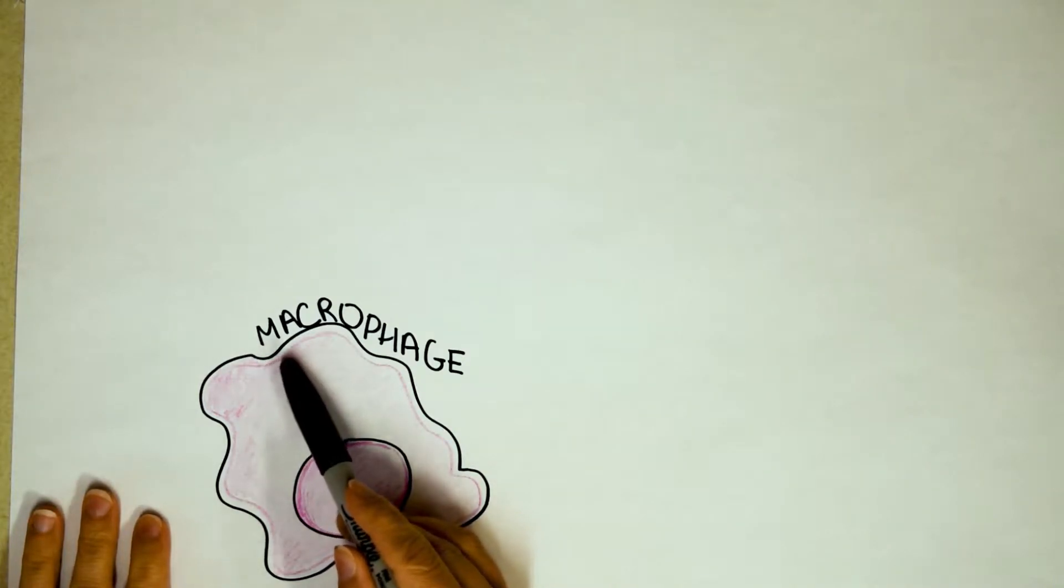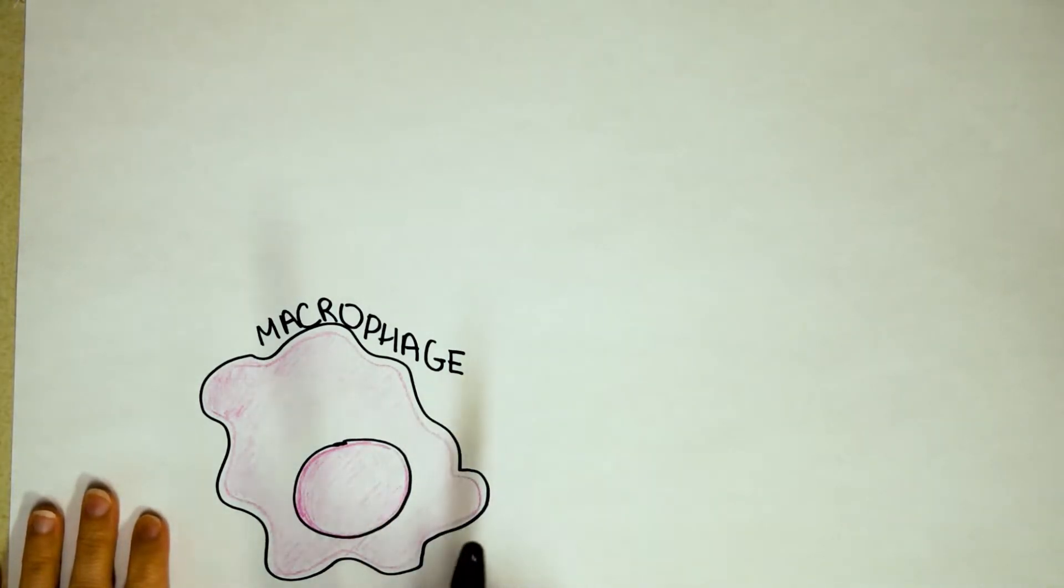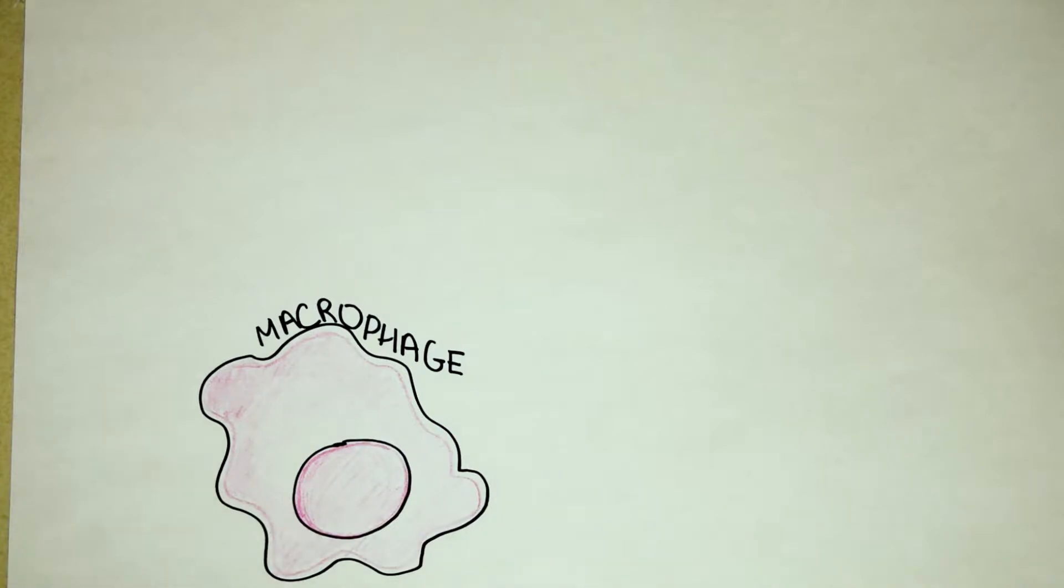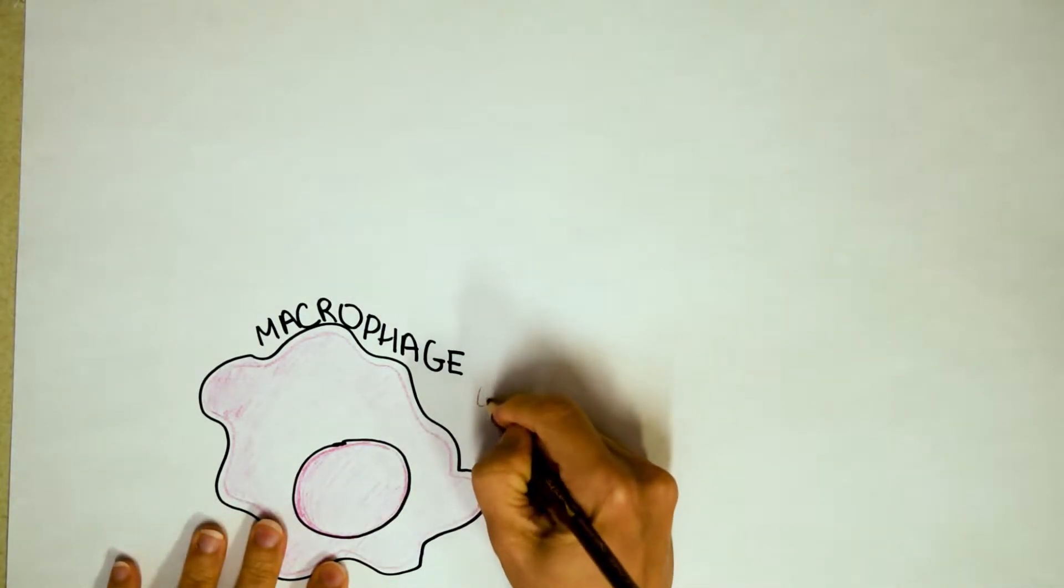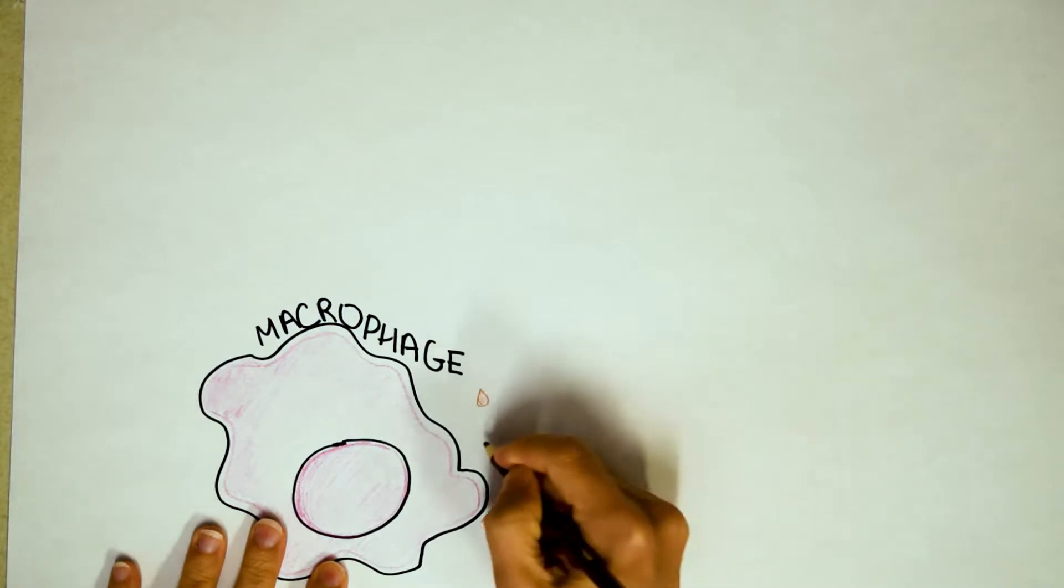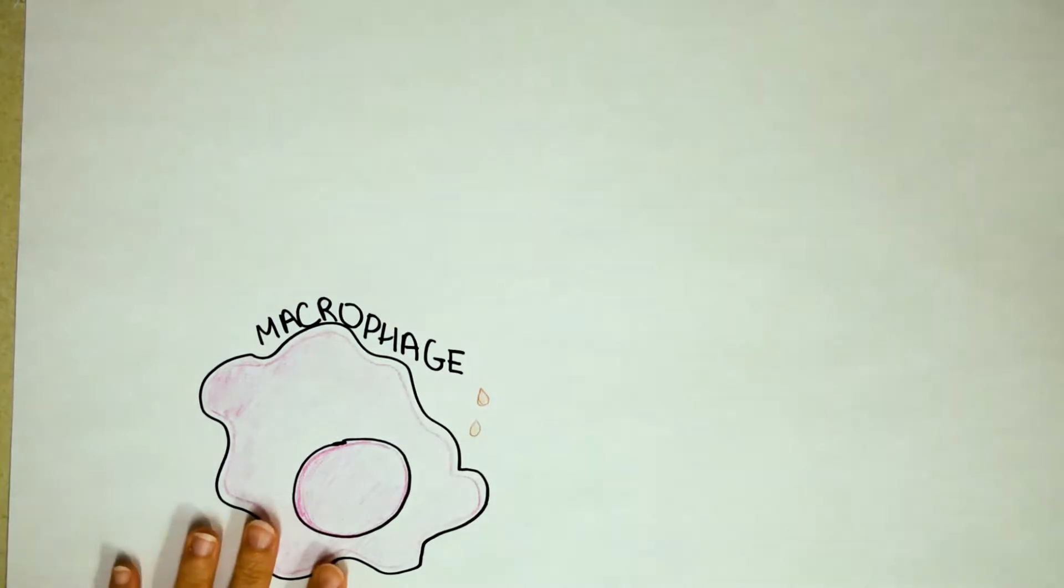So allergies actually start with a macrophage. You might not have expected that. And let's say that you ate for the very first time a sesame bagel and scrambled eggs. So there are sesame, obviously this is not to scale, like sesame seeds and egg pieces mixed in your body.